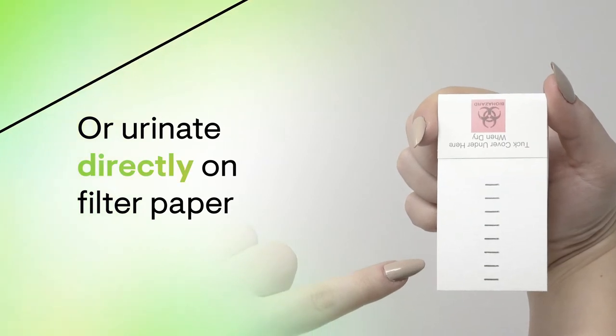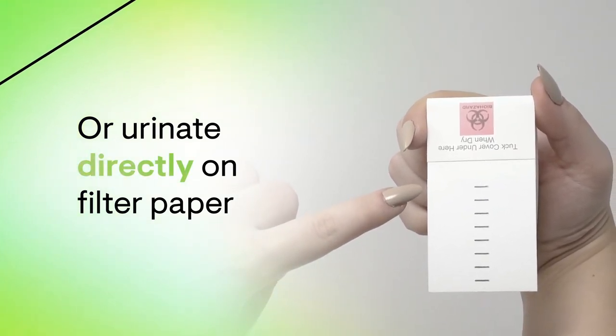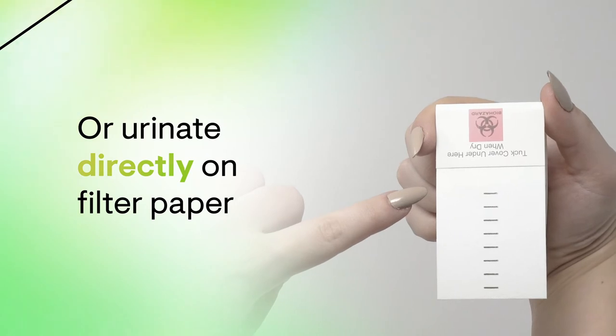You can also urinate directly onto the filter paper if you prefer. Just follow the same steps to saturate to the black line.